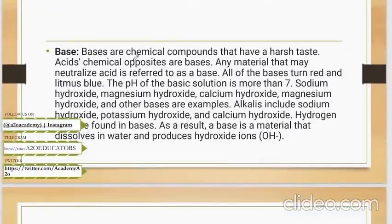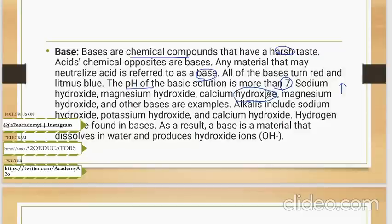Second we have bases. Bases are chemical compounds that have harsh taste. Basically you don't taste them. They are not found in food items commonly. Any material that may neutralize acid is referred to as base. So any material which can change the taste of an acid is base. This will have a pH of more than 7 because acid had less than 7, so bases naturally have more than 7. Sodium hydroxide, magnesium hydroxide, calcium hydroxide - see all hydroxides. Why? Because they release hydroxide ions.